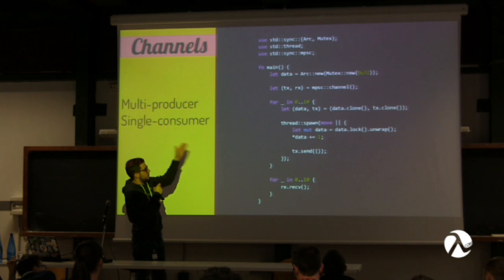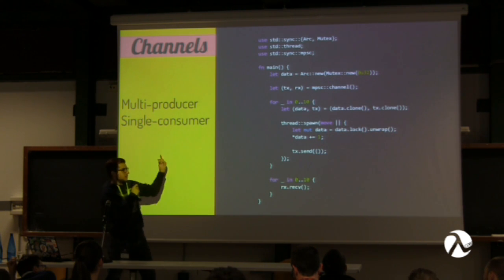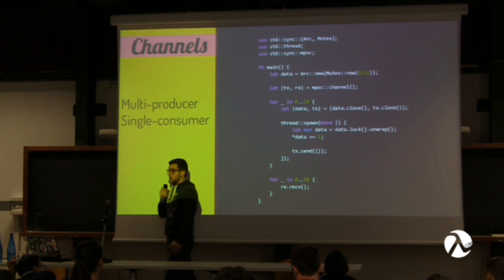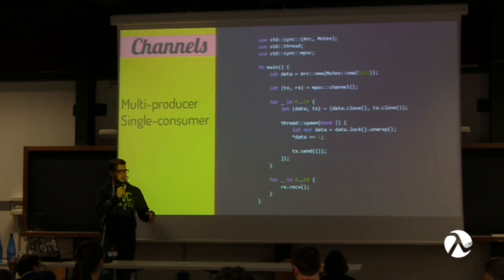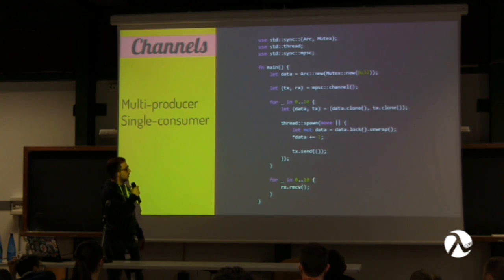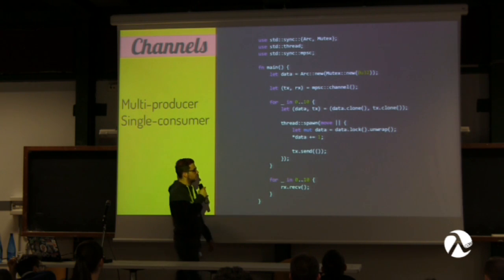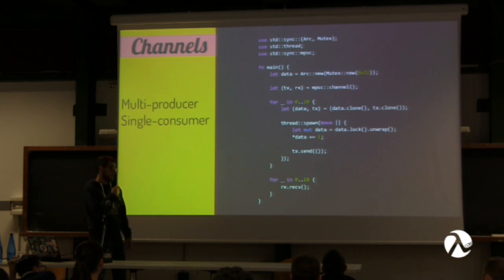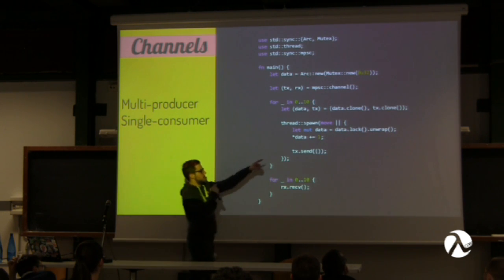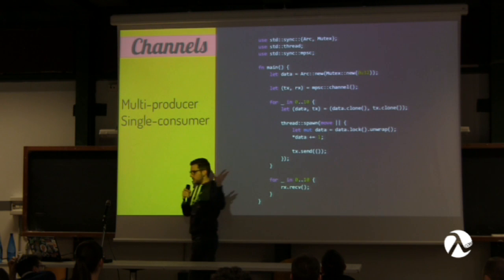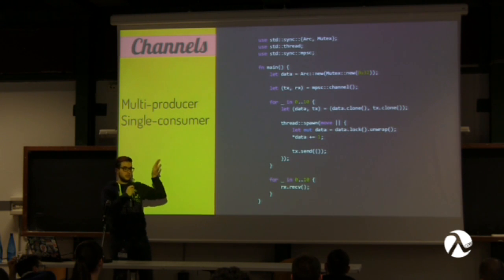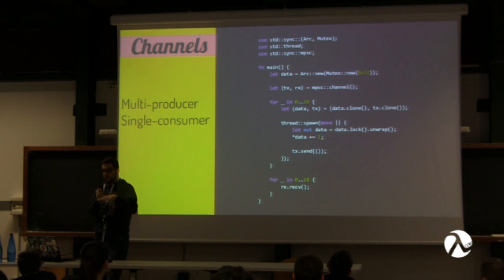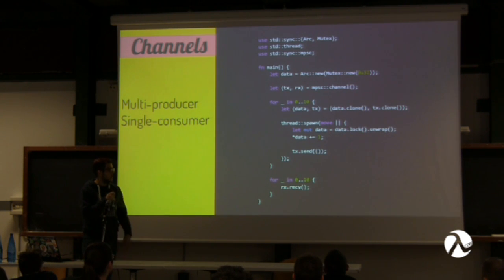Threads in Rustlang used to be green threads and were changed to system threads. They were previously called tasks, now called threads for consistency with the rest of the world. The move closure keyword says this closure can be moved safely because the whole environment is completely owned by the closure, so moving it to another task won't cause data races, memory corruption, or unsafe operations.